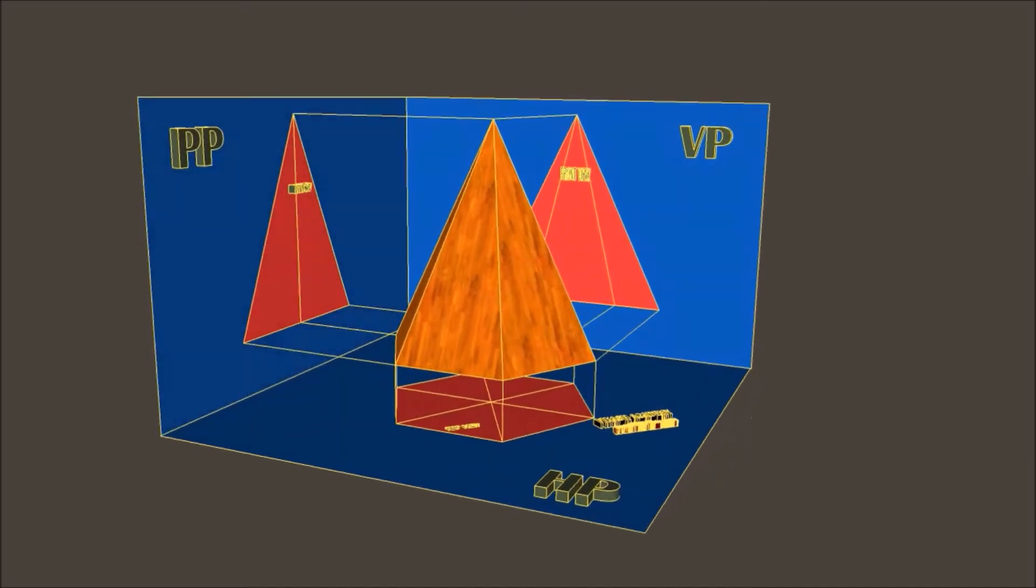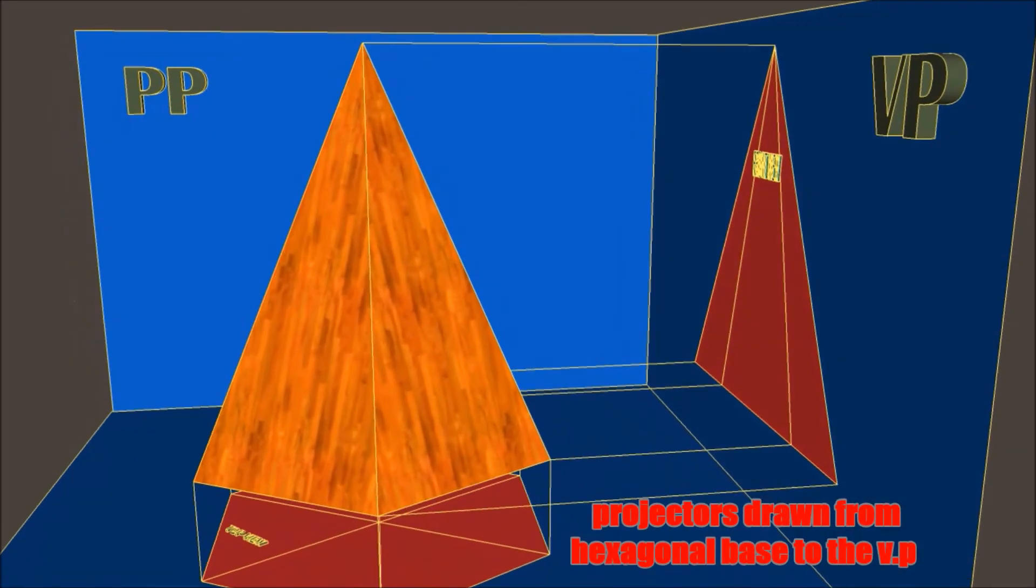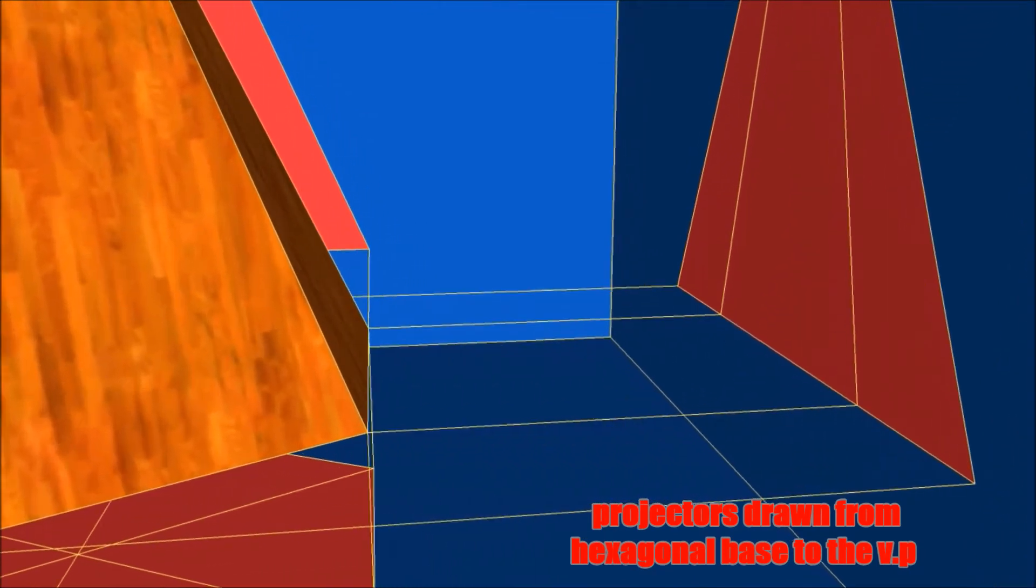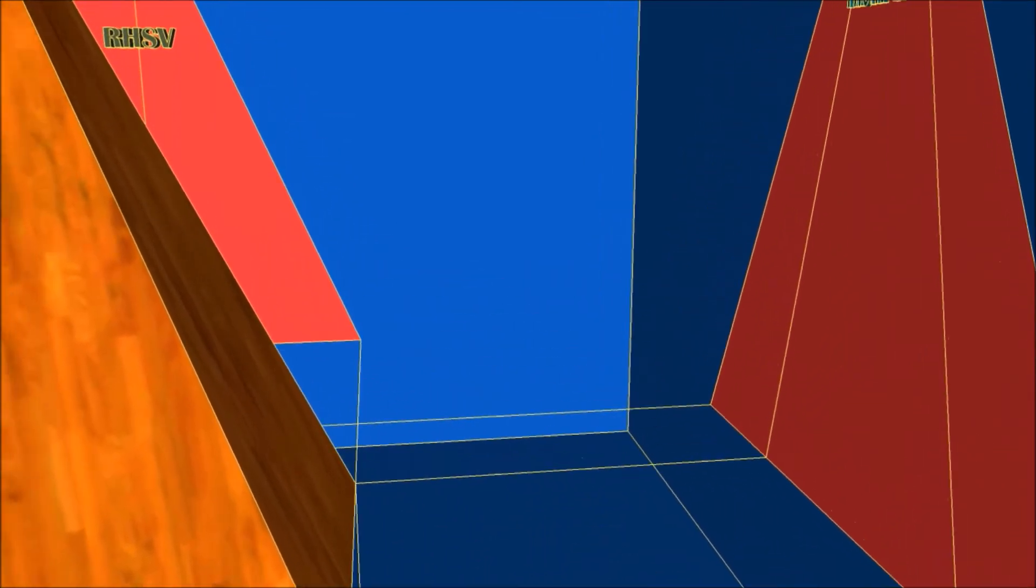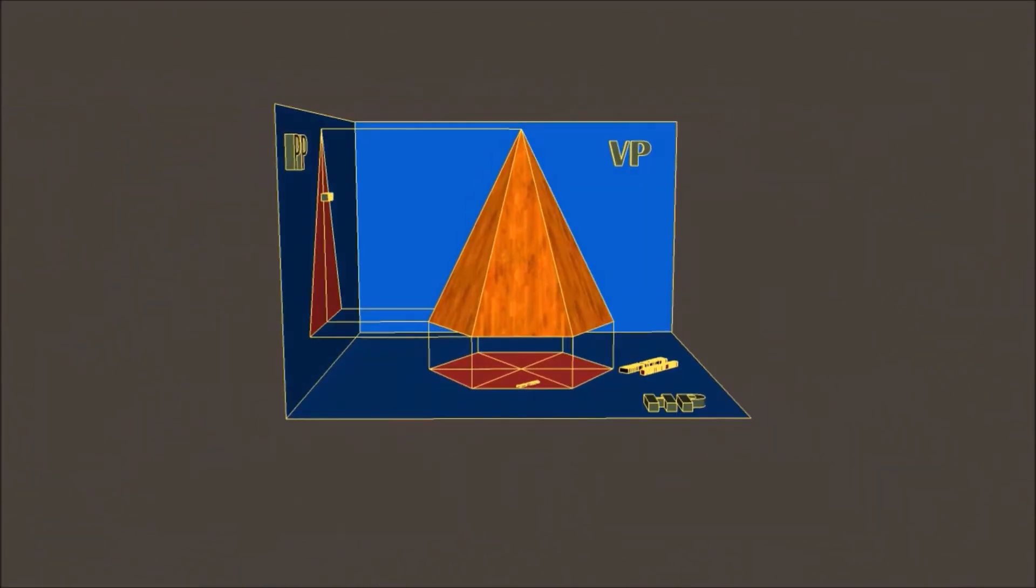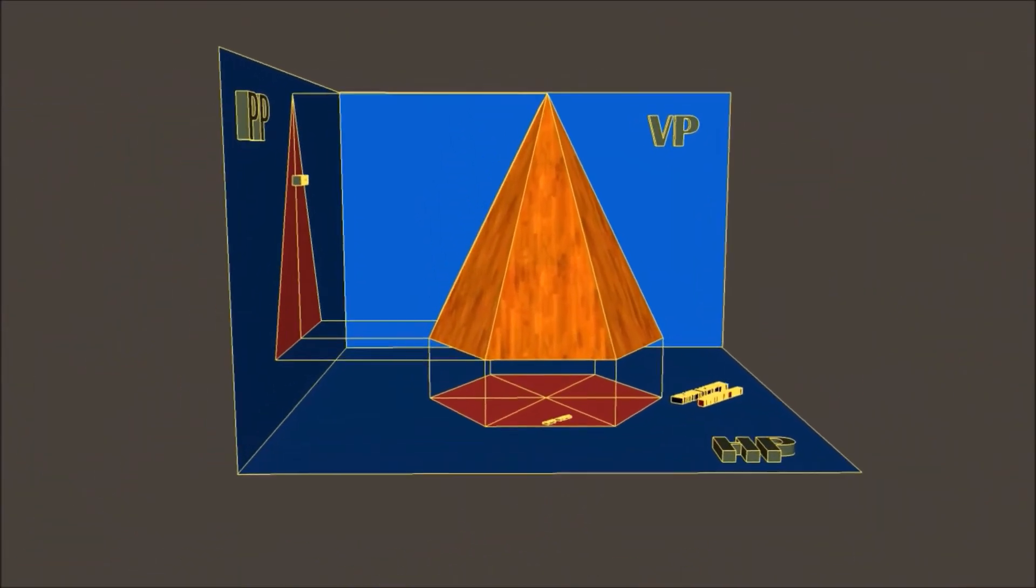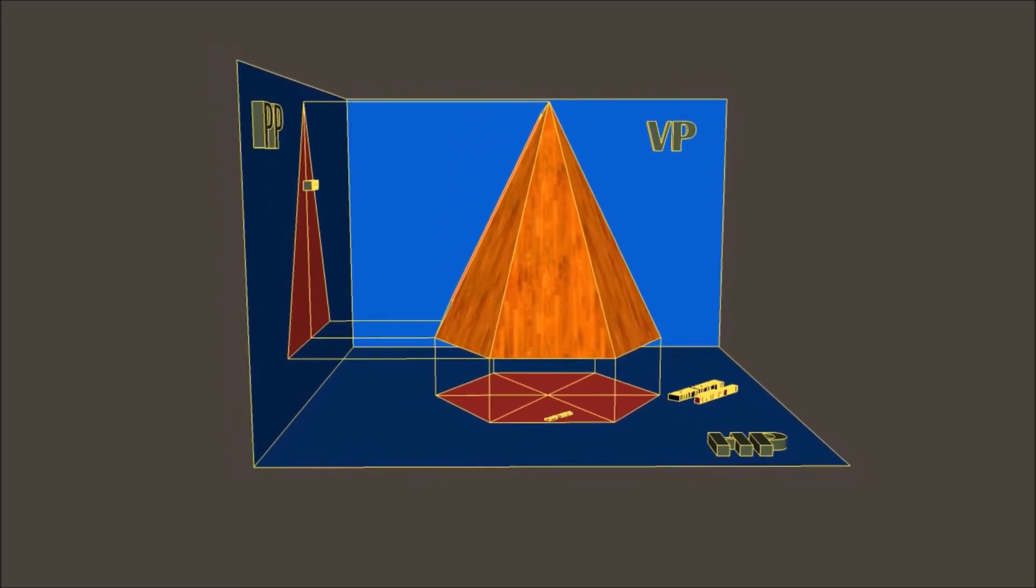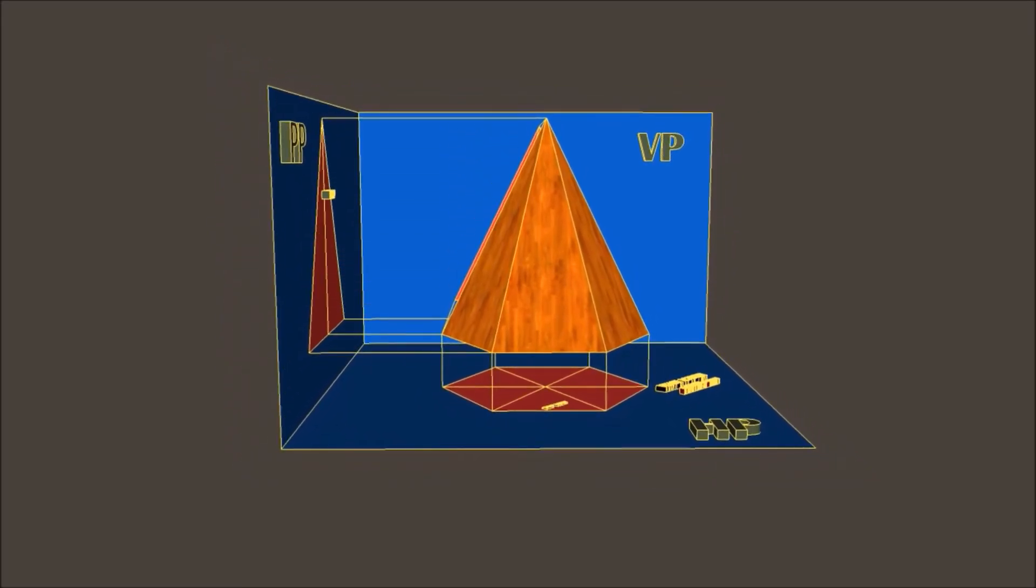This is due to the projector's line drawn from the hexagonal base of this particular pyramid, also due to projector's line drawn from the apex of this pyramid. So finally we are going to obtain our front view which looks like this as you can see in the animation.